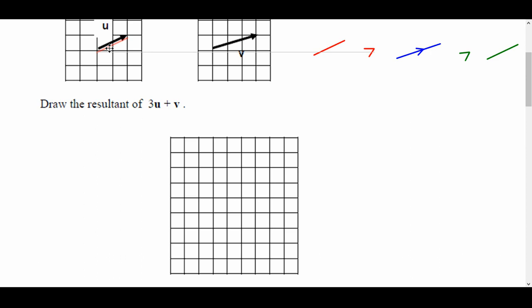This one goes 2 along and 1 up, so 2 along and 1 up, but I've got to times it by 3, so instead of going 2 along, we'll go 6 along, and instead of going 1 up, we'll go 3 up, because that's a multiple of 3, and I'll put an arrow in it. So that's 3U.